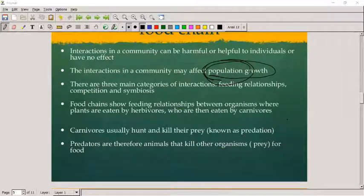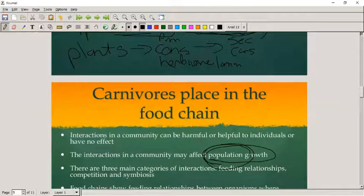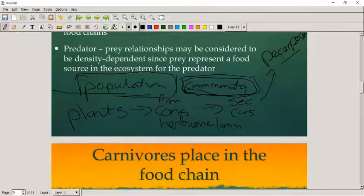Food chains show feeding relationships between organisms where plants are eaten by herbivores and they are eaten by carnivores. When we draw the food chain, always remember that we point the arrow towards whatever is getting the energy.